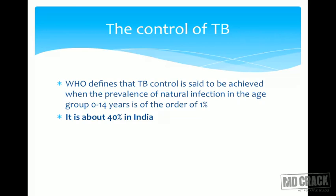The WHO defines TB control as achieved when the prevalence of natural infection in the age group 0 to 14 years is of the order of just 1%. In India, this number is about 40% — 40 times higher than the elimination benchmark. So tuberculosis is very rampant in India and we have a very long way to go for elimination.